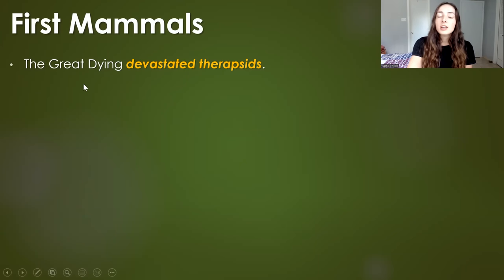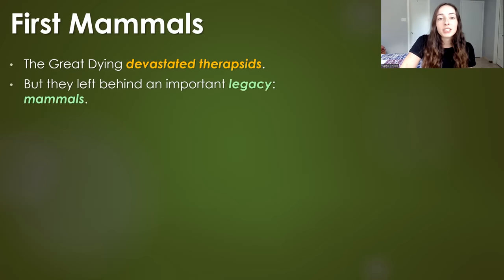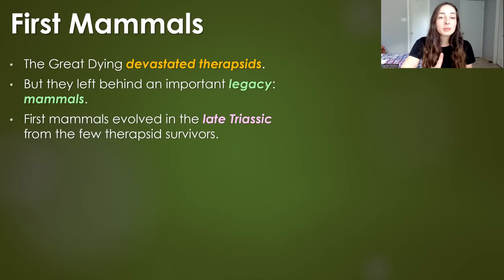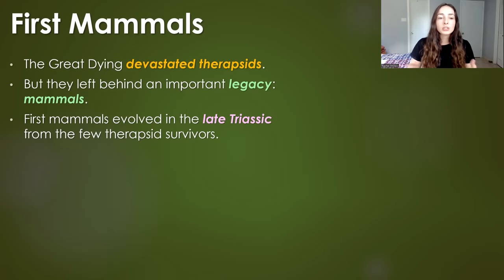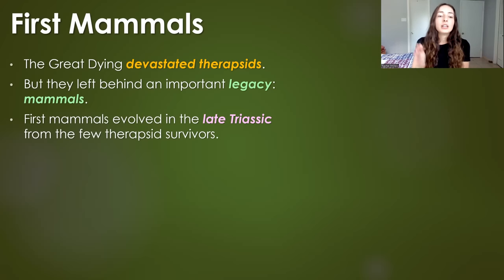Now that we know what vegetation was around, let's talk about what animals were eating it — starting with the first mammals. The Great Dying devastated therapsids, a group of organisms that evolved from amniotes. But these therapsids left behind an important legacy: mammals. The first mammals evolved in the late Triassic from the few therapsid survivors. Therapsids did rediversify greatly in the Triassic, but then completely dwindled after the late Triassic extinctions.